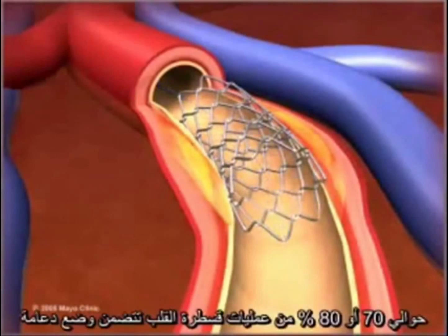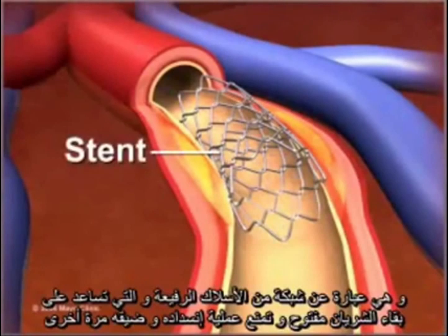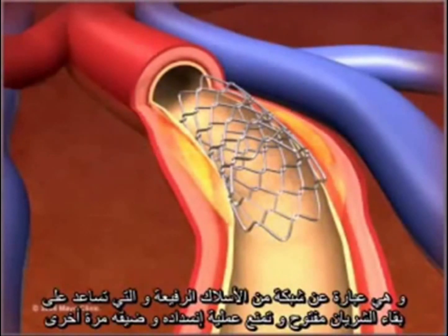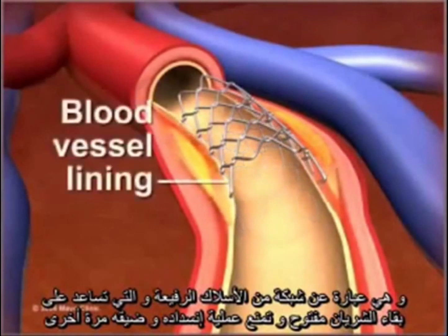About 70 to 90 percent of coronary angioplasty includes placement of a stent, a wire mesh tube that holds open weakened arteries. The stent may prevent re-narrowing after an artery is widened, and it stays in place permanently as the blood flows.